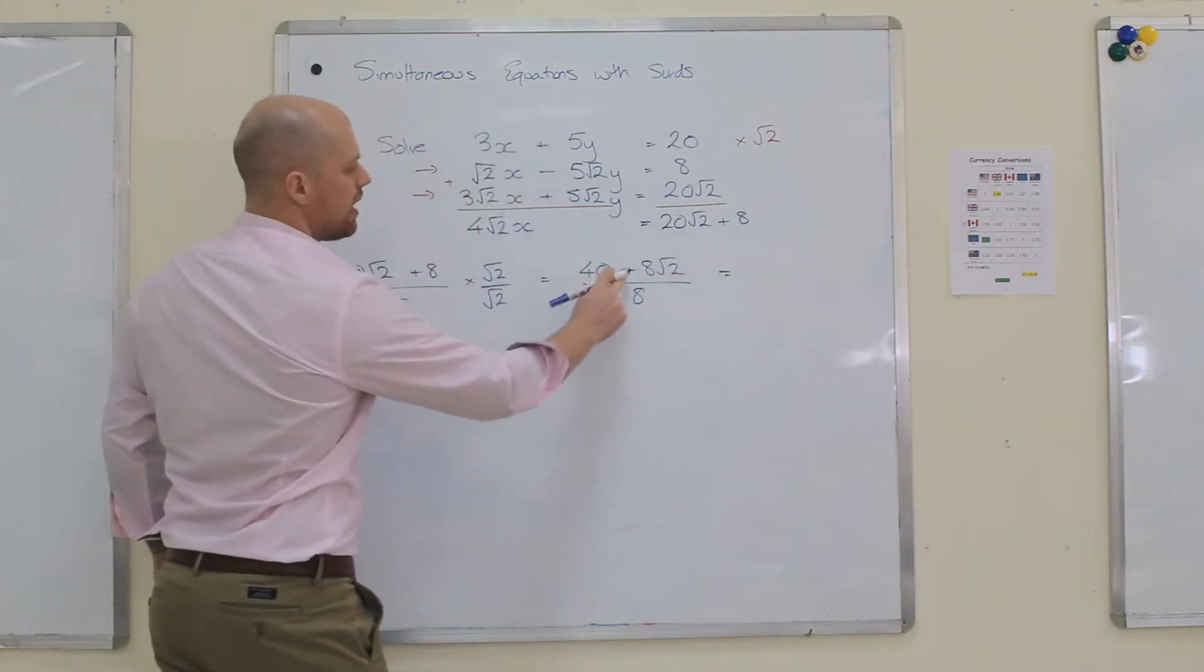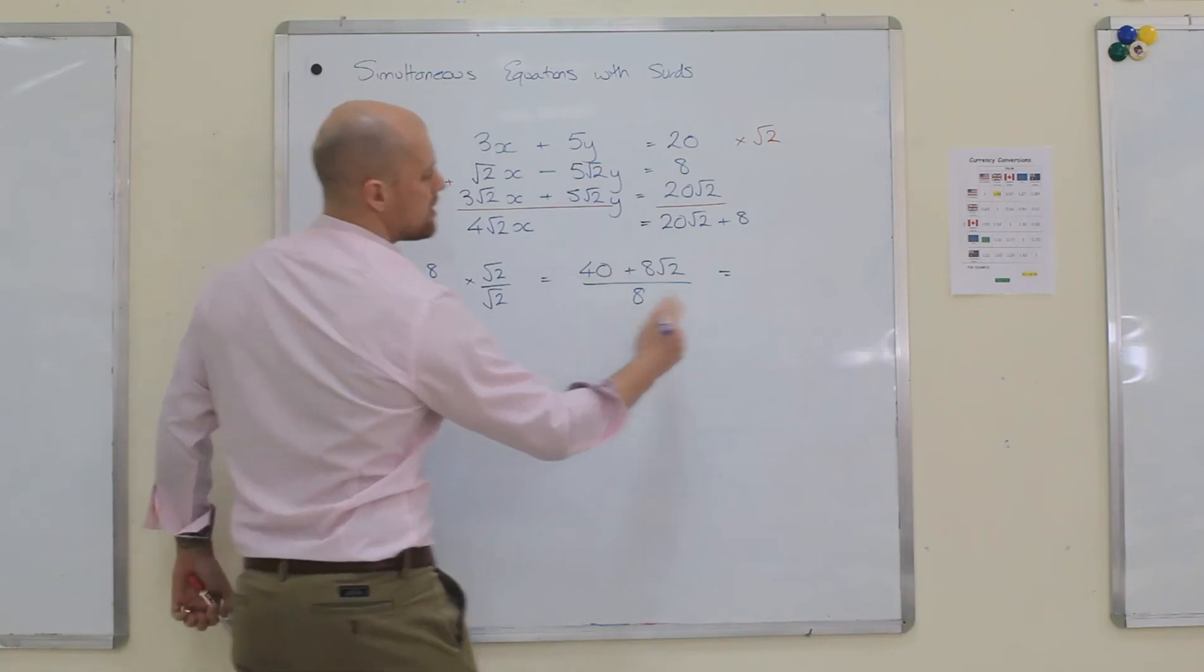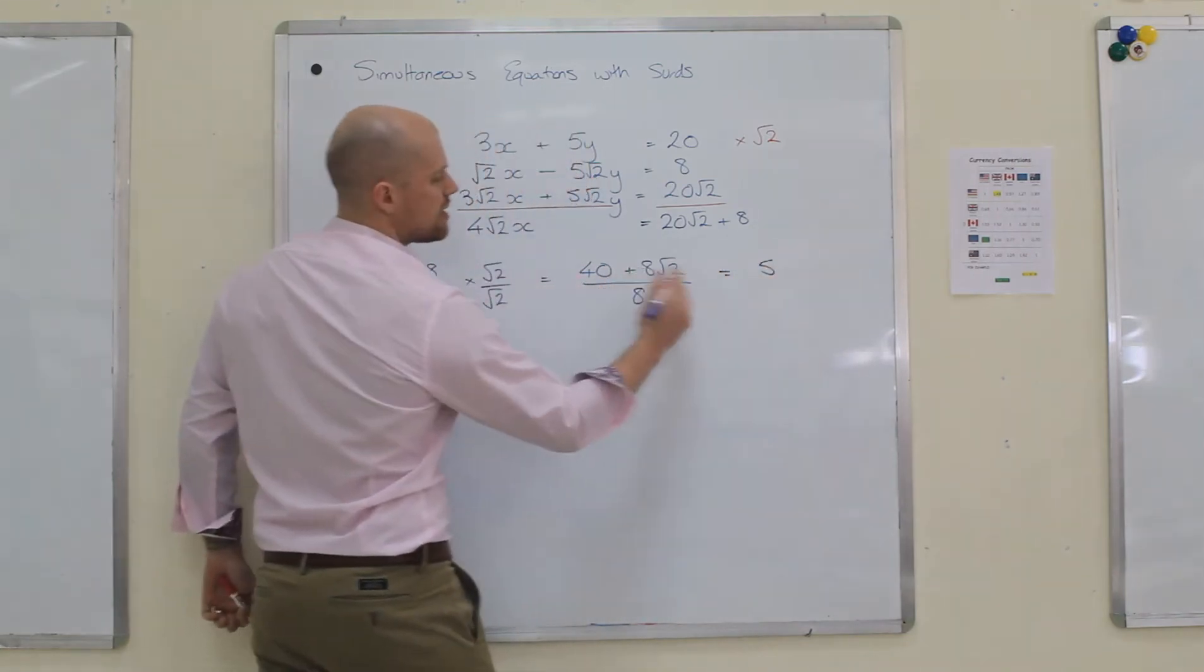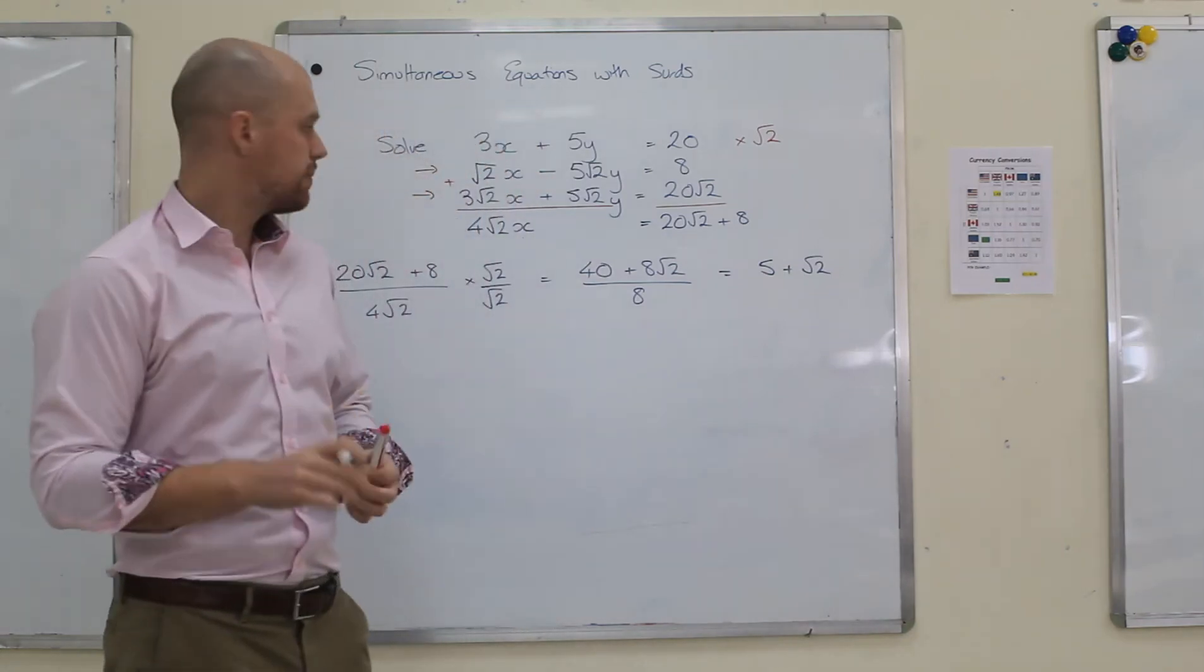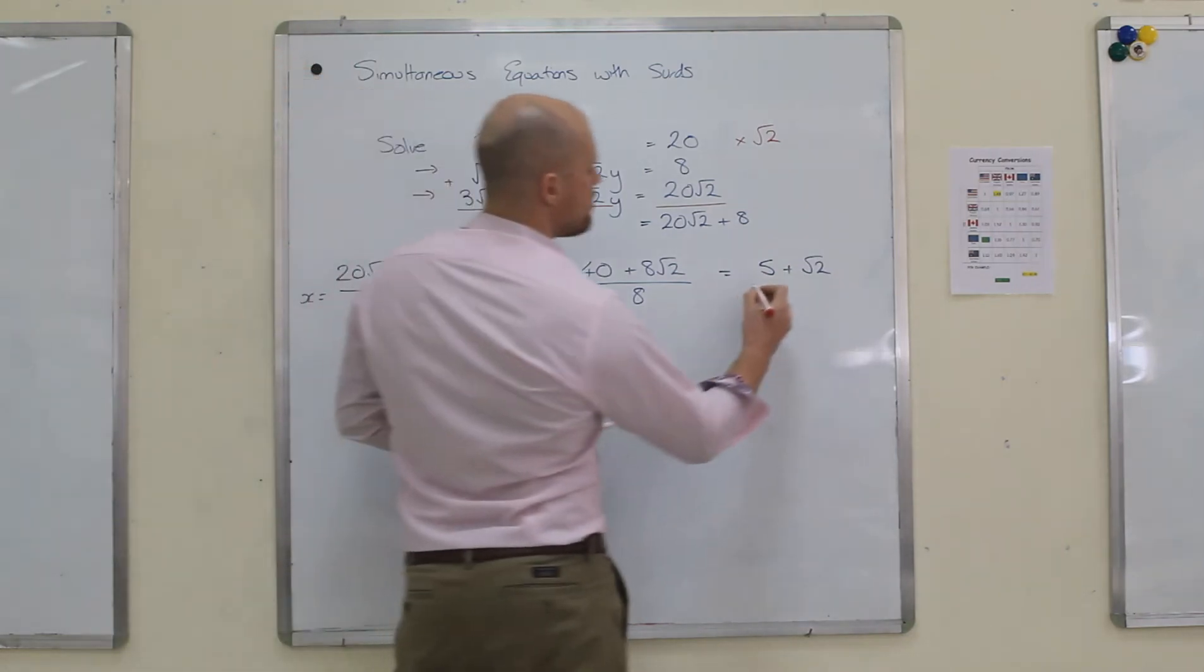You have 40 divided by 8, which is 5, and then plus 8 root 2 divided by 8, which is just root 2. And that is my x.